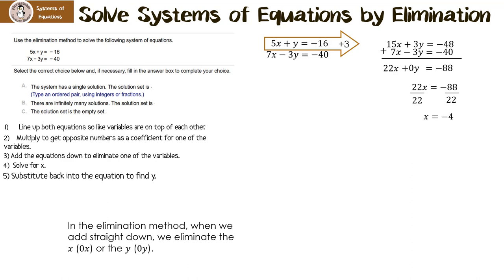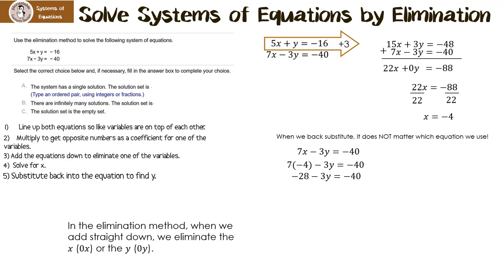Our last step is to find y. When we back substitute, it does not matter which equation we use. I decided to use the second one, but you could have used the first. I'm going to put negative 4 in for x. 7 times negative 4 is negative 28. I need to get negative 3y by itself, so I'm going to add 28 to both sides. This gives us negative 3y equals negative 12. I divide by negative 3 on both sides, and it turns out that y is positive 4.